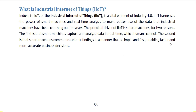IIoT harnesses the power of smart machines and real-time analysis to make better use of data that industrial machines have been producing for years. In industry, machines are used and real-time analysis enables better use — for example in food packing, dairy, milk industry, and chocolate production.